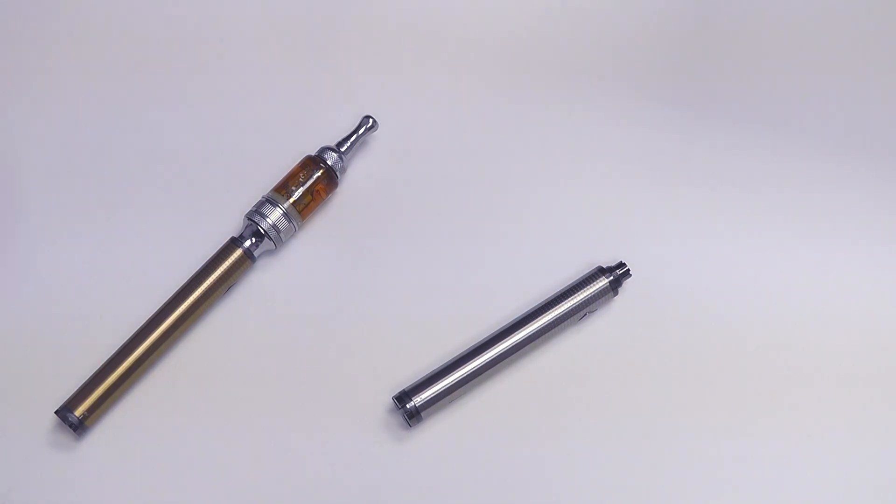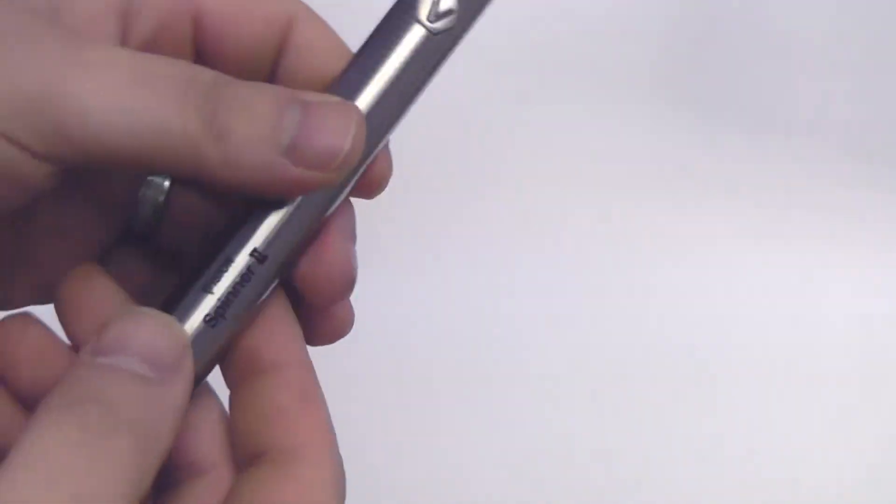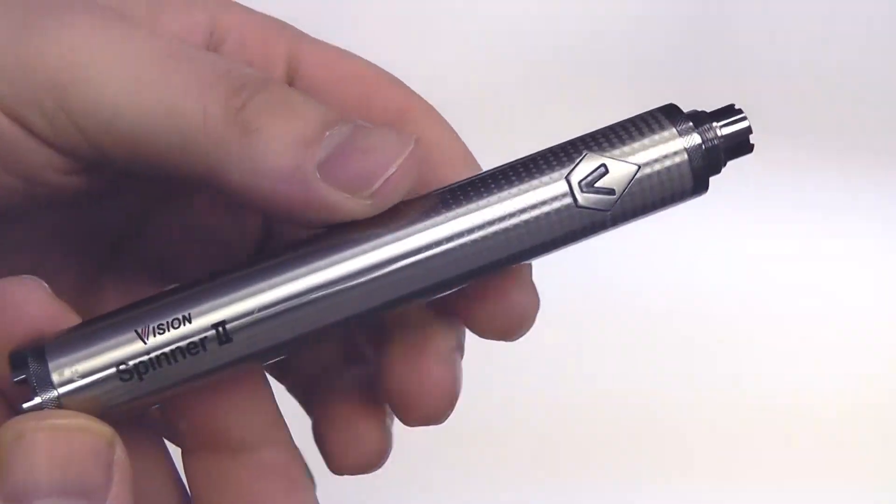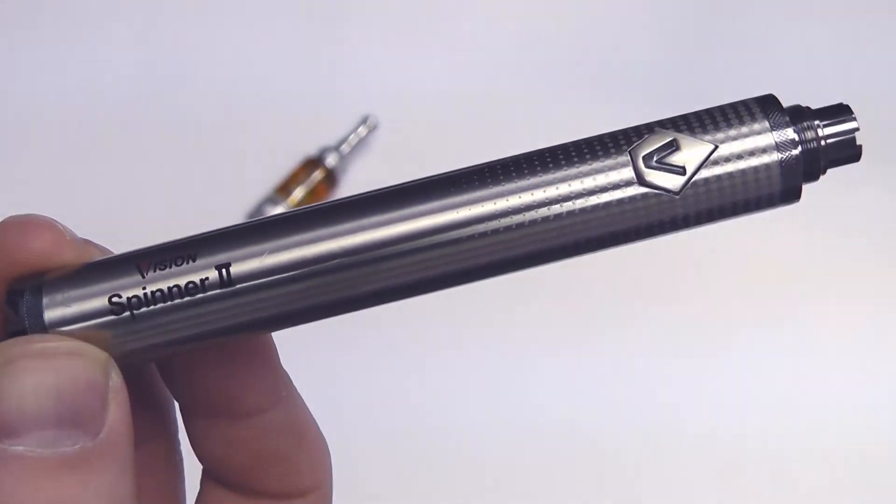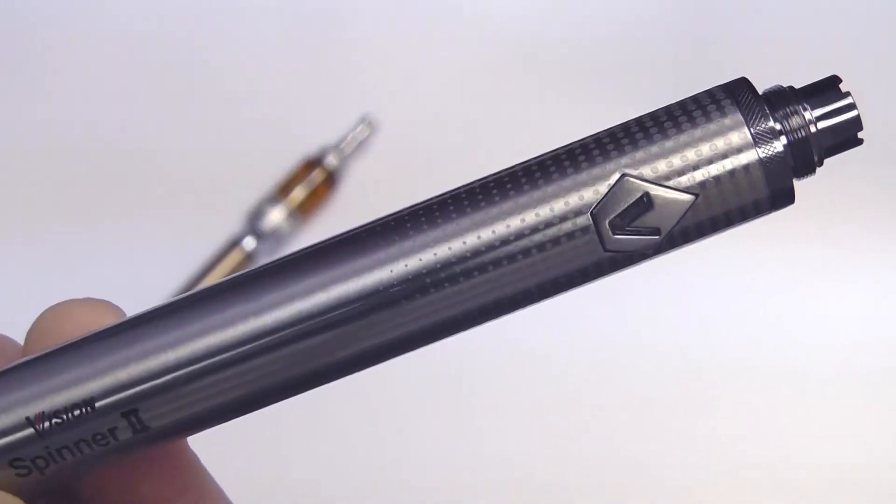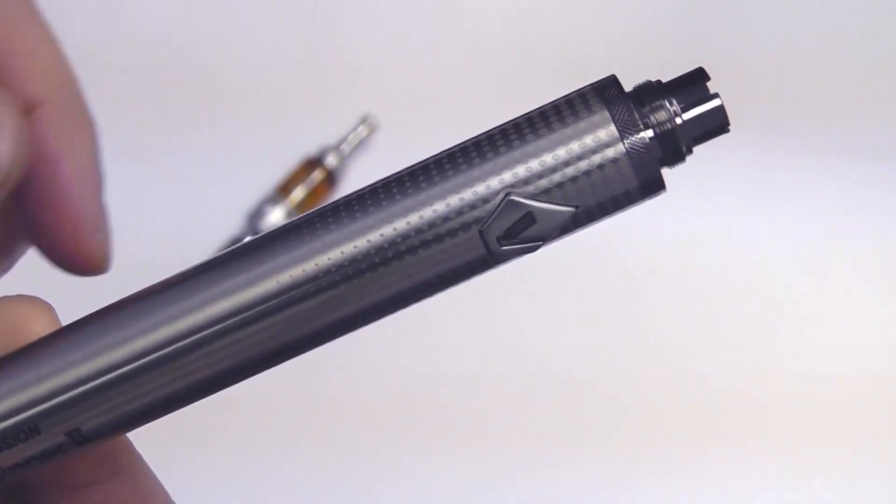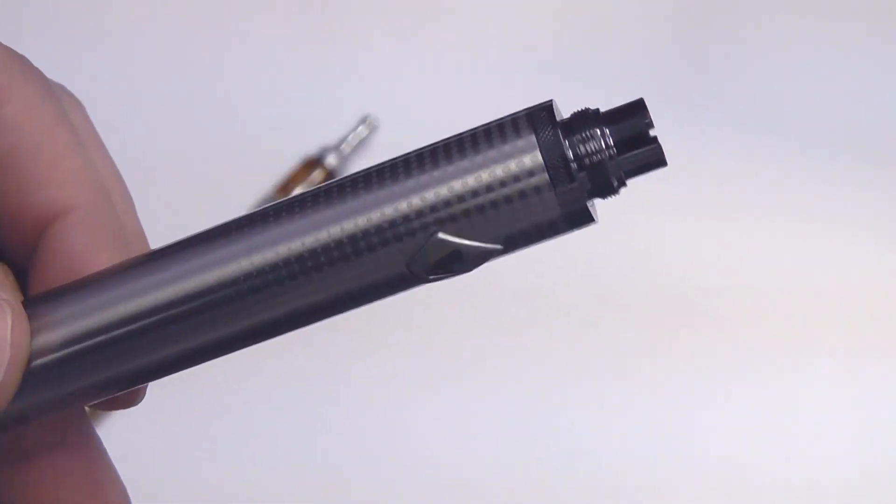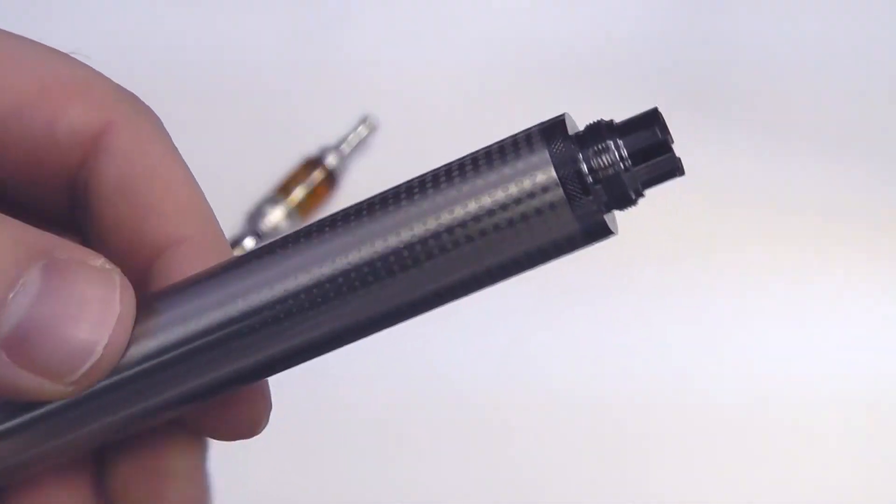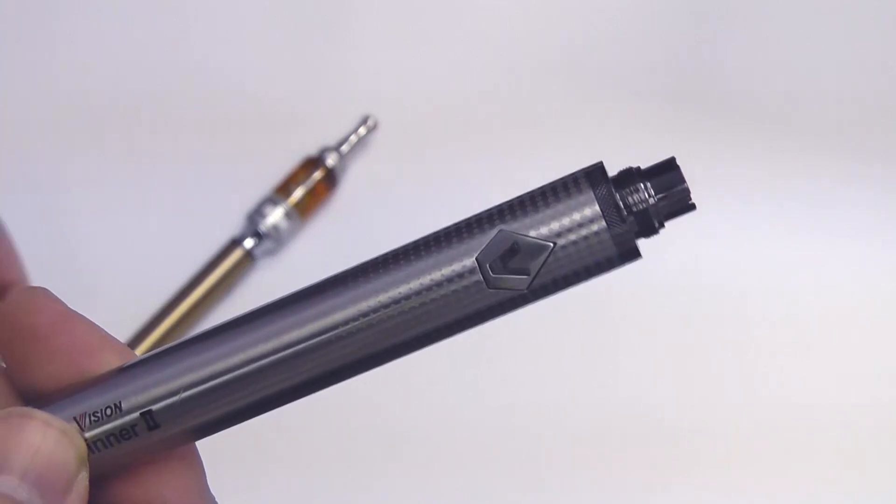Now let's take a look at the product itself up close here. You'll notice obviously it says Vision Spinner 2, but it's got this really cool design to it and you can see the fading dots as you go down the length of the battery. This one happens to be stainless steel.